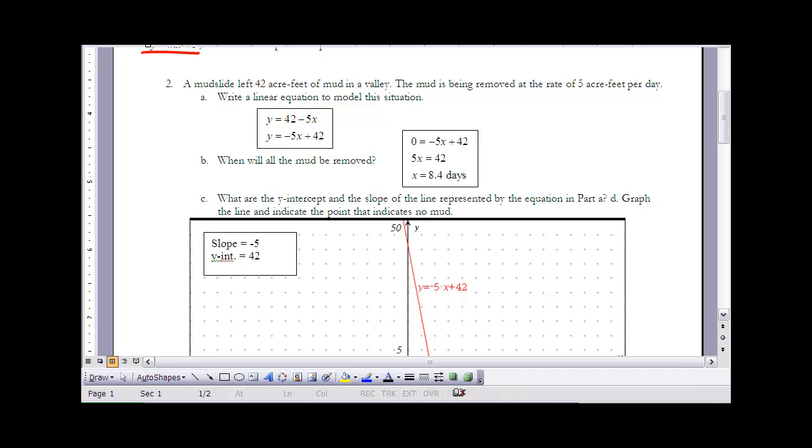There's going to be a lot of units that we run into as we're going through this course that you might not be familiar with, and all acre feet is is units. Same thing here, acre feet, those are just units. In terms of writing our equation we don't really have to worry about that except to understand that that's the units for the amount of mud that we have there. If I'm going to write a linear equation for that, well the 42 is my starting point. That's how much mud was originally put into the valley. I have a constant decrease in that amount because I'm always taking five acre feet out per day.